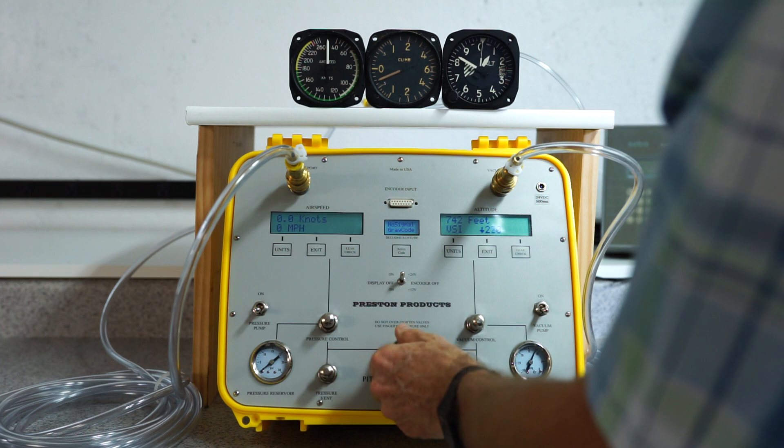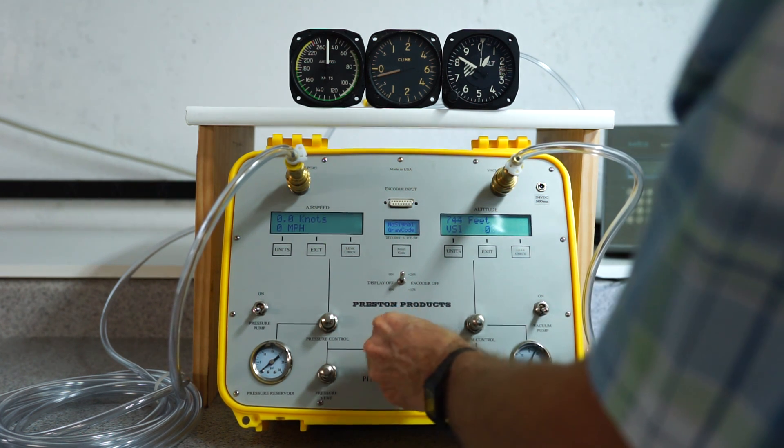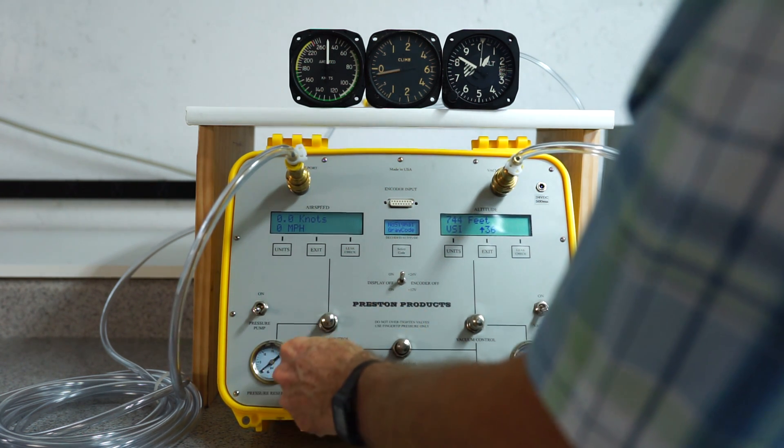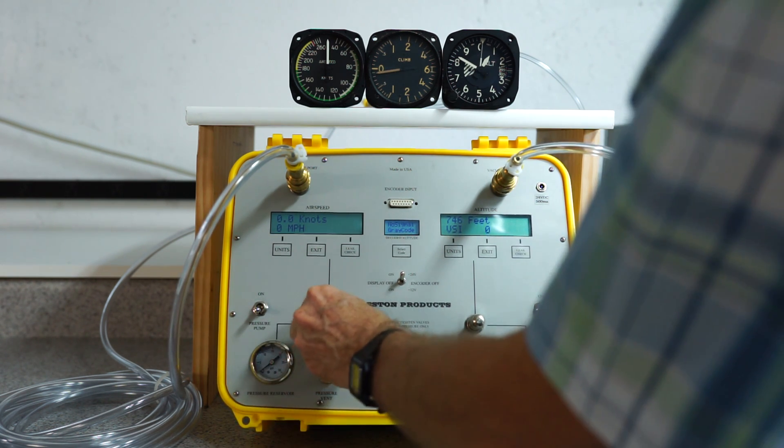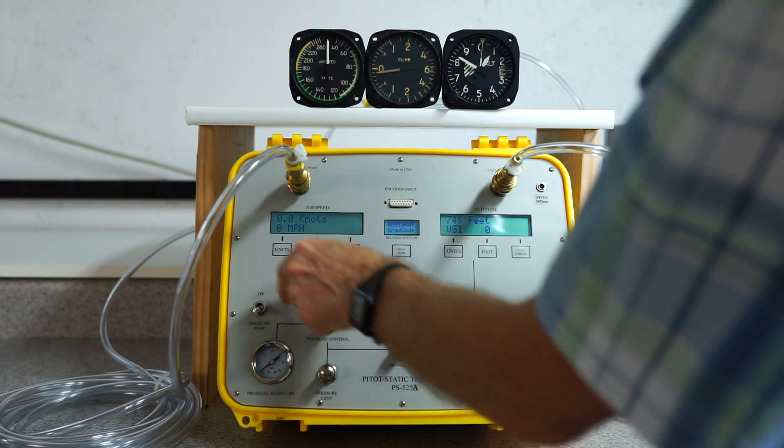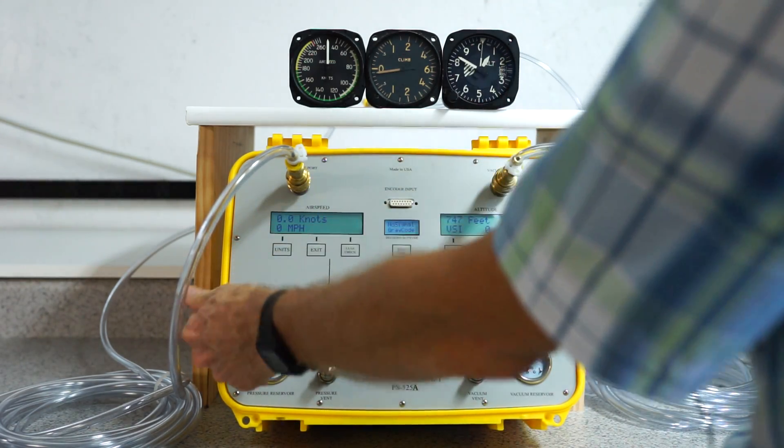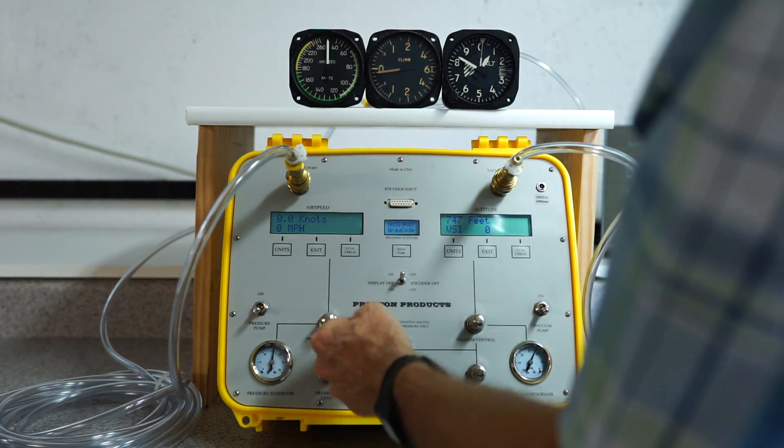All right, now I'll close the cross bleed valve. Close the vent, pressure vent valve. And there's no pressure in the reservoir right now. I'll turn on the pump for a little bit. That puts the pressure in it.